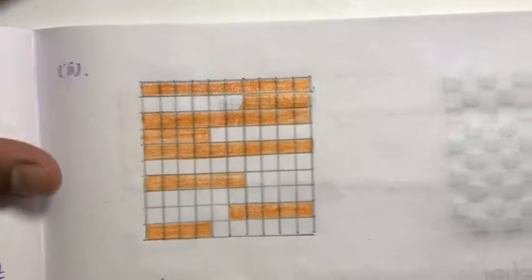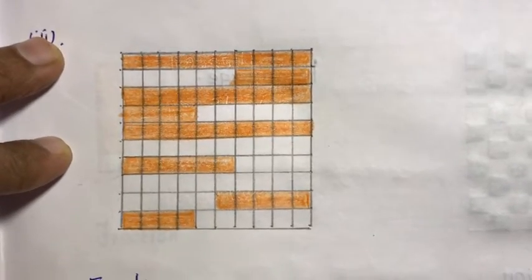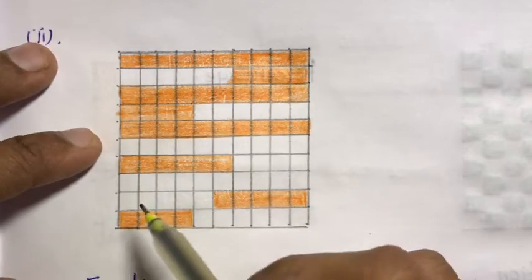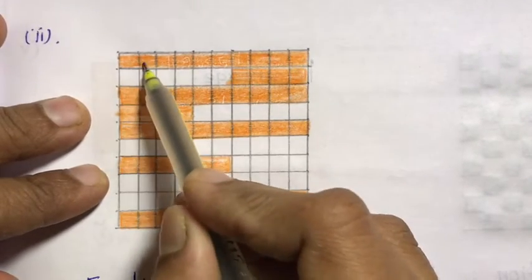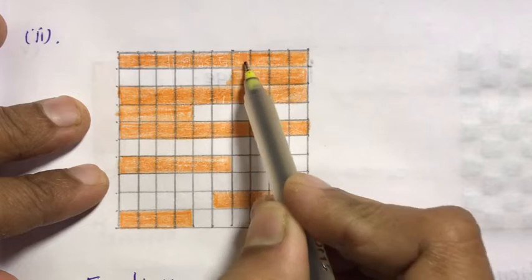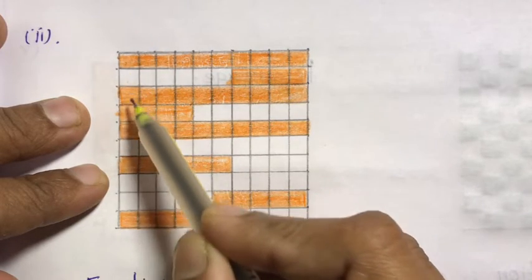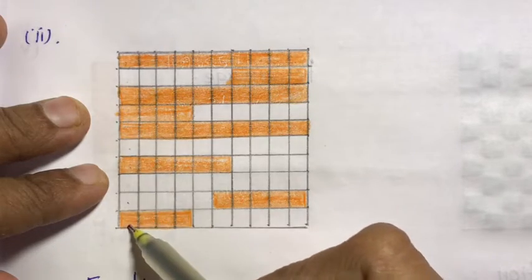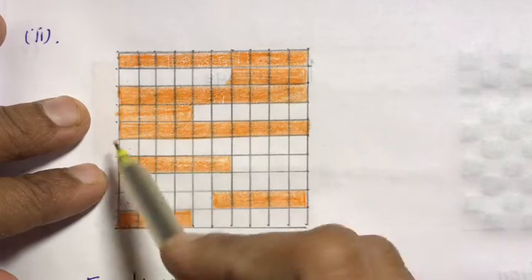Next, second subdivision. Using the same fraction formula — counting all the squares: 10 tens are 100, so total is 100 squares. Now counting the colored squares.